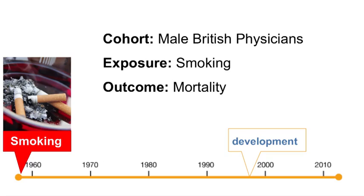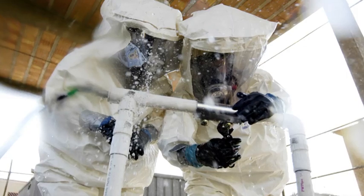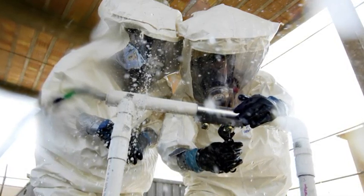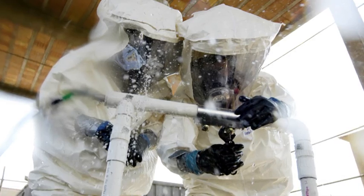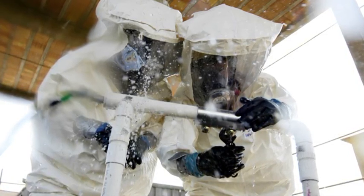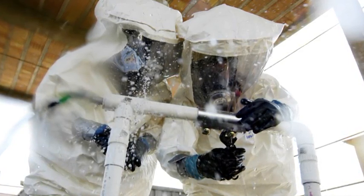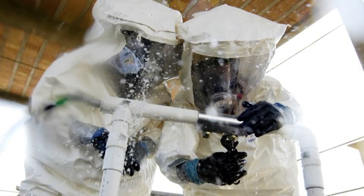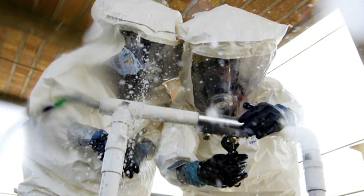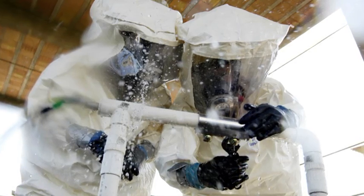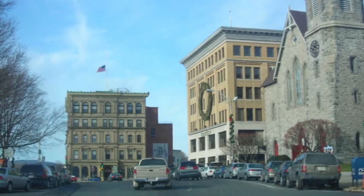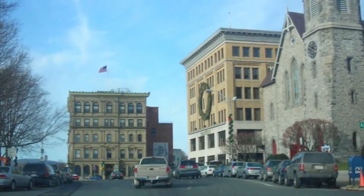An investigator may select a cohort specifically to study certain uncommon or rare exposures. In some cohort studies, population groups with known exposures to a suspected hazardous substance are first identified and recruited, and then another group without that exposure is identified. The risk or rate of the outcome over time is then compared between the two groups. Cohort studies are therefore particularly useful for studying uncommon or rare exposures, because it is usually possible to assemble groups of persons with that uncommon exposure.